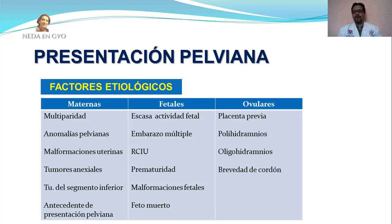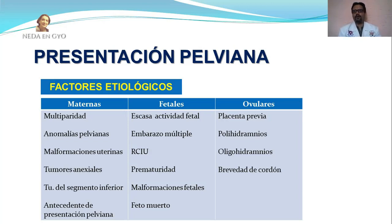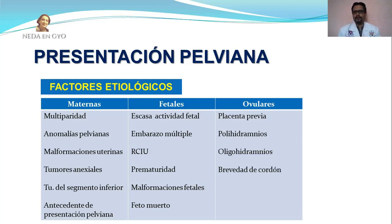Por último, tenemos las causas ovulares: placenta previa, polihidramnios, oligohidramnios y brevedad de cordón. En la placenta previa, el hecho de que ocupe el segmento uterino inferior dificulta que el feto migre hacia la presentación cefálica. El polihidramnios genera exceso de movilidad y el oligohidramnios lo contrario, disminución de la movilidad por poco espacio. La brevedad de cordón, un cordón muy corto, condiciona a que el feto no pueda rotar.